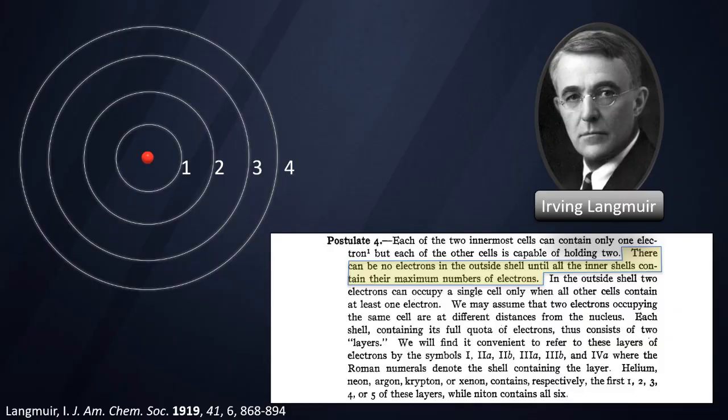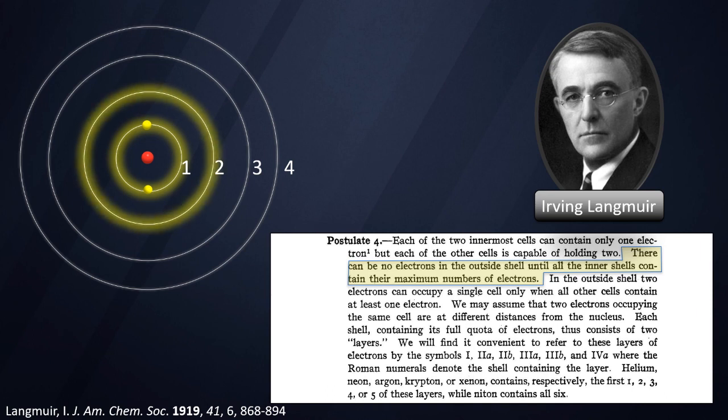So essentially, Langmuir was arguing that you have to, as you increase the number of protons and electrons in an element, in an atom, you have to fully populate that first energy level with 2 electrons, before moving on to the second energy level, which can take the next 8 electrons.